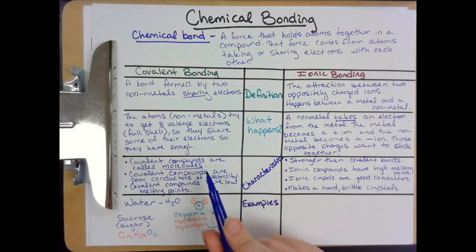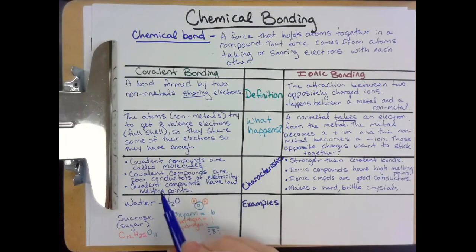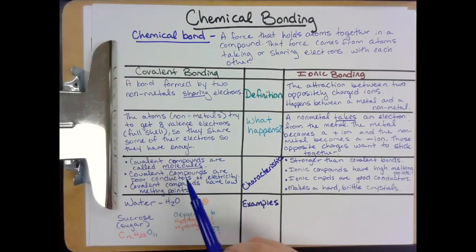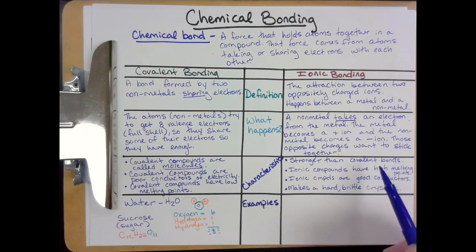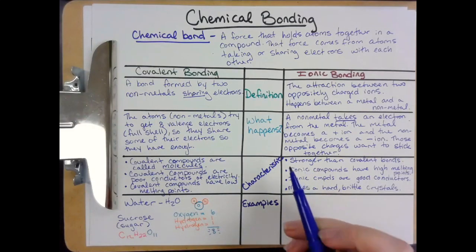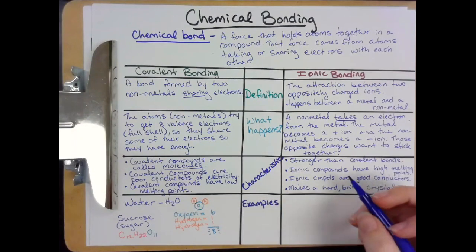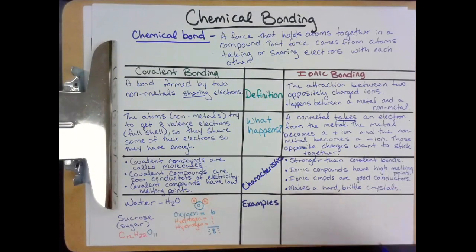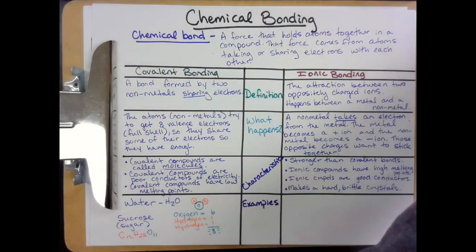Comparing ionic and covalent characteristics, it's almost the opposite — especially with conductors and melting points. Covalent compounds are bad conductors and have low melting points; ionic compounds are good conductors and have high melting points. That is a contrast between ionic and covalent bonds. Now we've got our examples of ionic bonds.